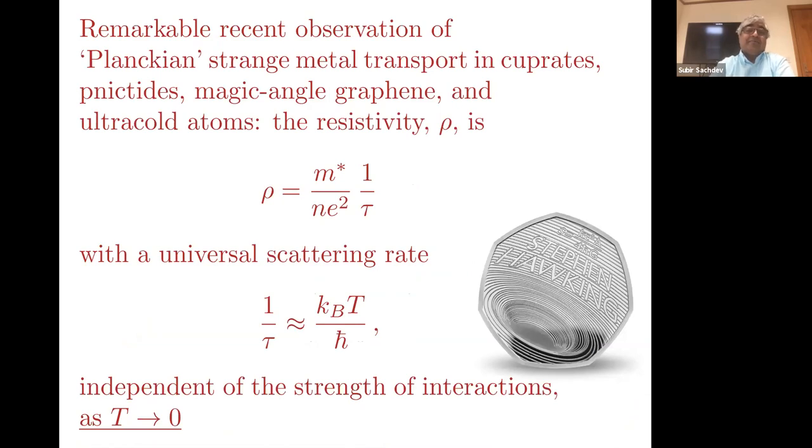There were a number of recent observations of what people are calling Planckian transport. By Planckian transport, one means what's shown here: you have some metal where you have some estimate of the effective mass of the carriers and the density of the carriers, and you measure the resistivity. Then you use the standard Drude formula to convert the resistivity to a scattering time tau. What people have found in a number of correlated electron systems is that one over tau is numerically very close over a wide temperature regime to this universal Planckian rate, because it depends only on the temperature and Planck's constant.